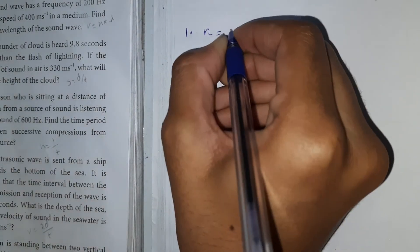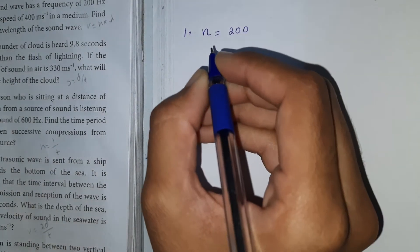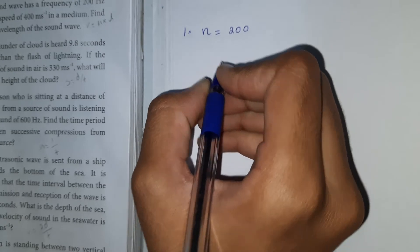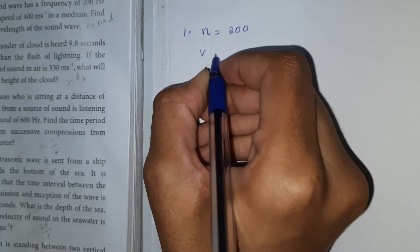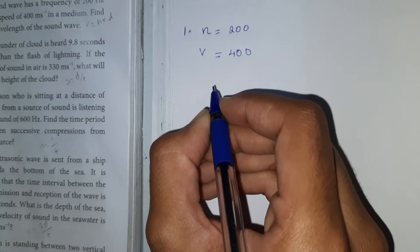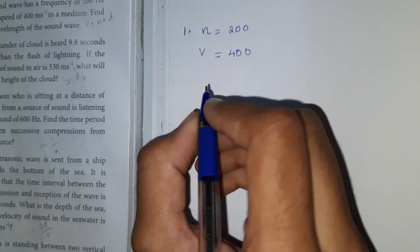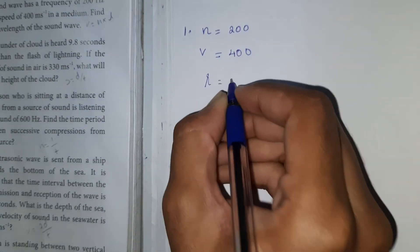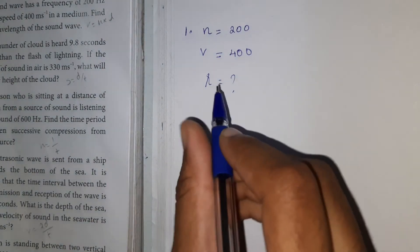So n is equal to 200. Next is speed, velocity v is equal to 400. We will find the wavelength, symbol lambda.